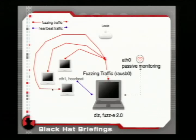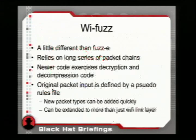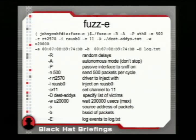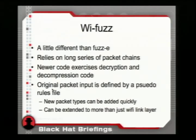Dave's fuzzer, WifiFuzz, not only manipulates individual packets but chains bad packets together or sends them in out-of-order or unusual request cycles. It's not just a single packet that causes these crashes — it's what we call a packet chain, a long chain of events leading up to the crash. John's fuzzer manipulated individual packets; WifiFuzz takes a more stateful approach.